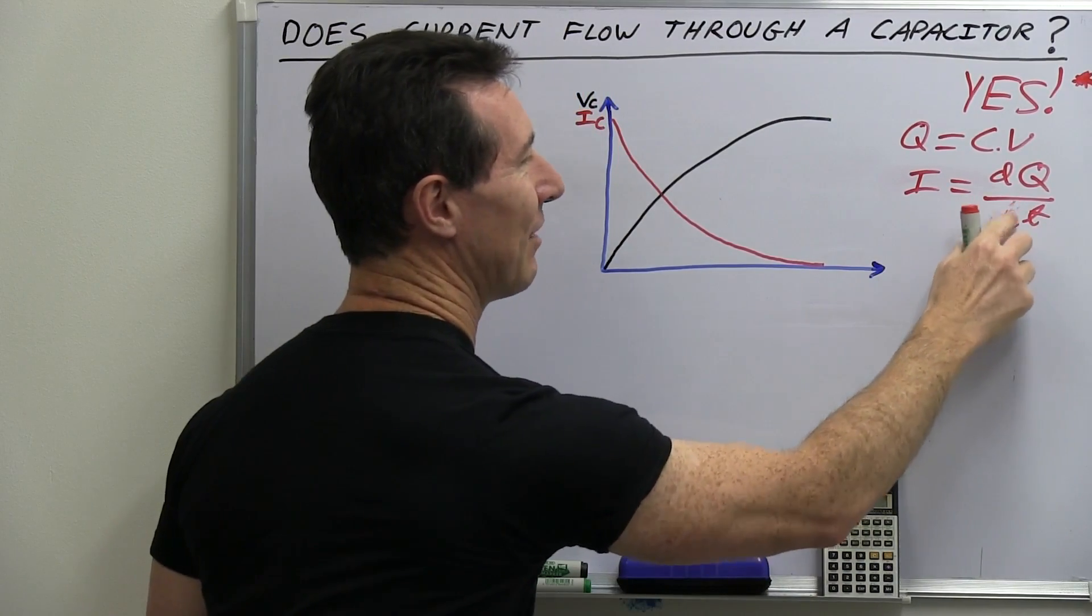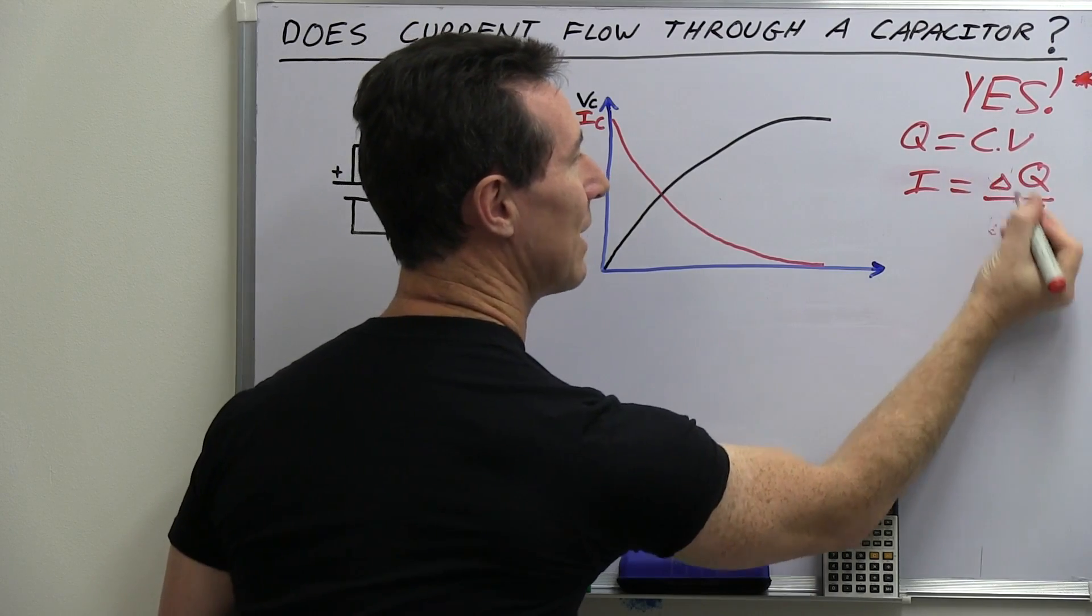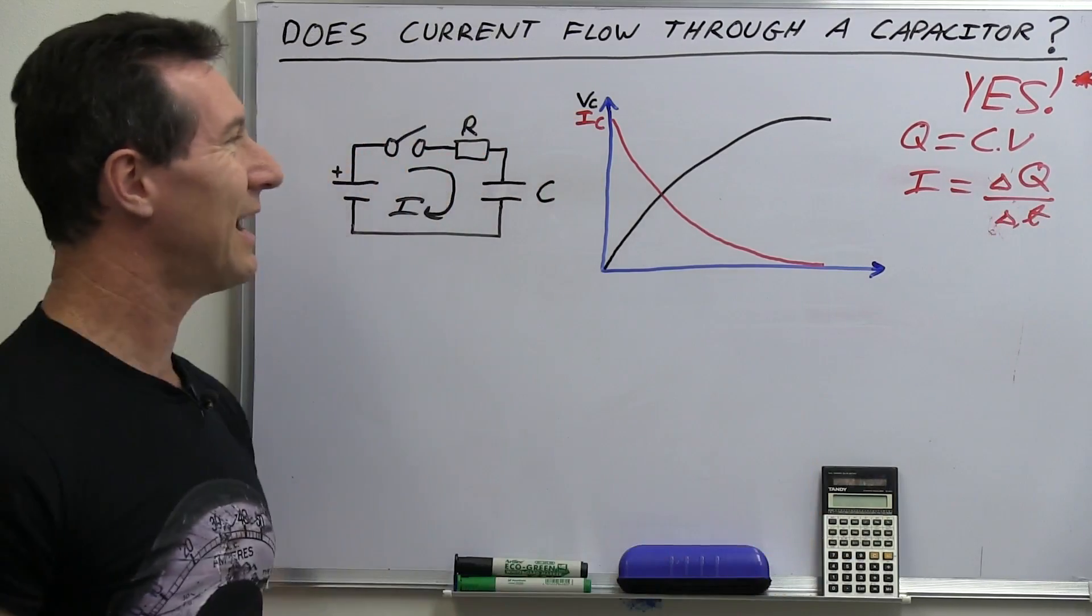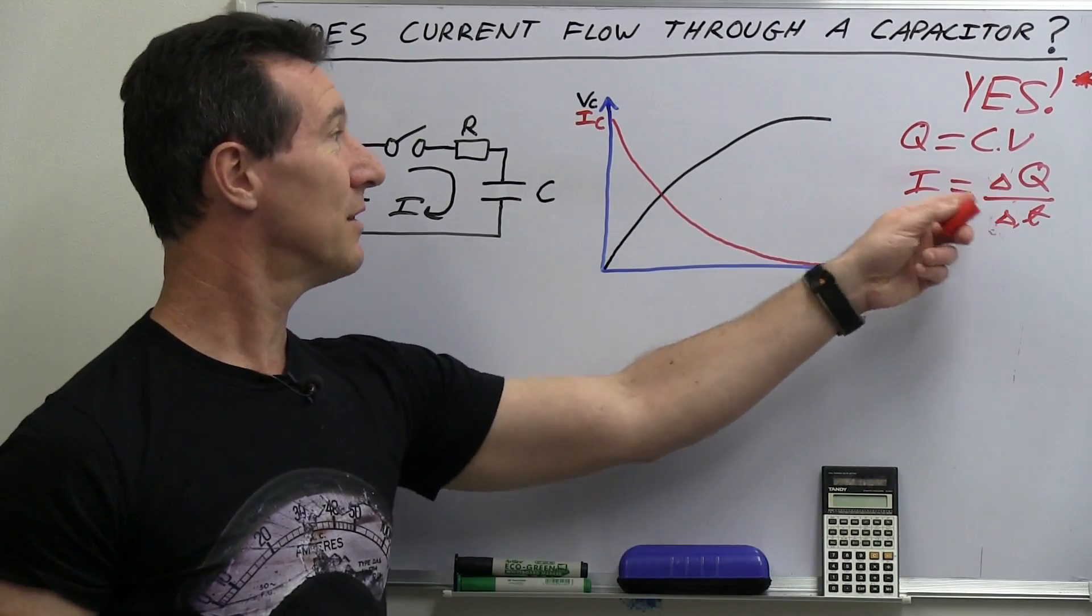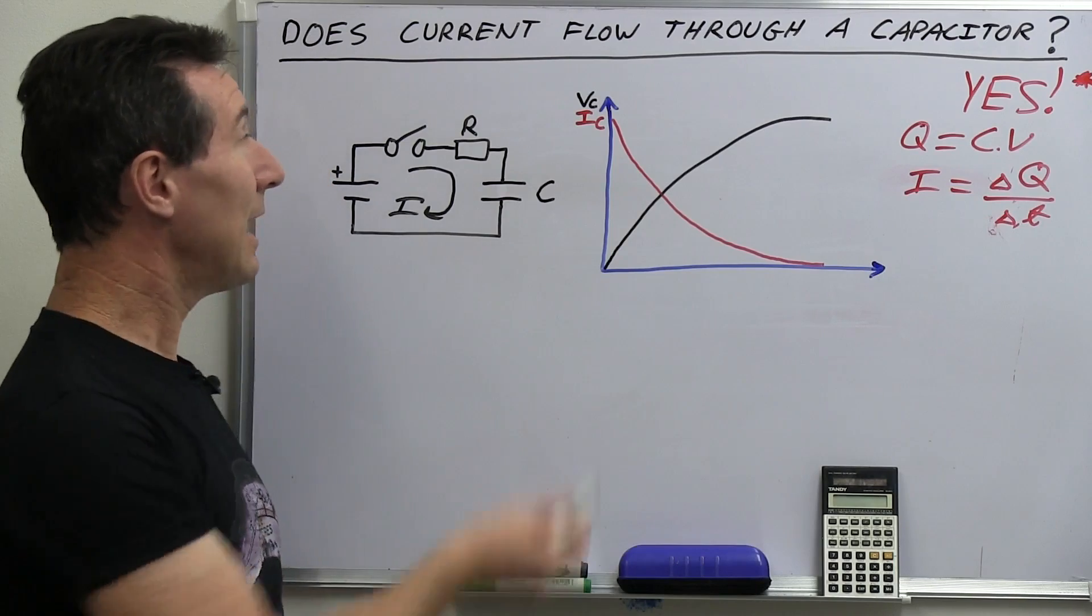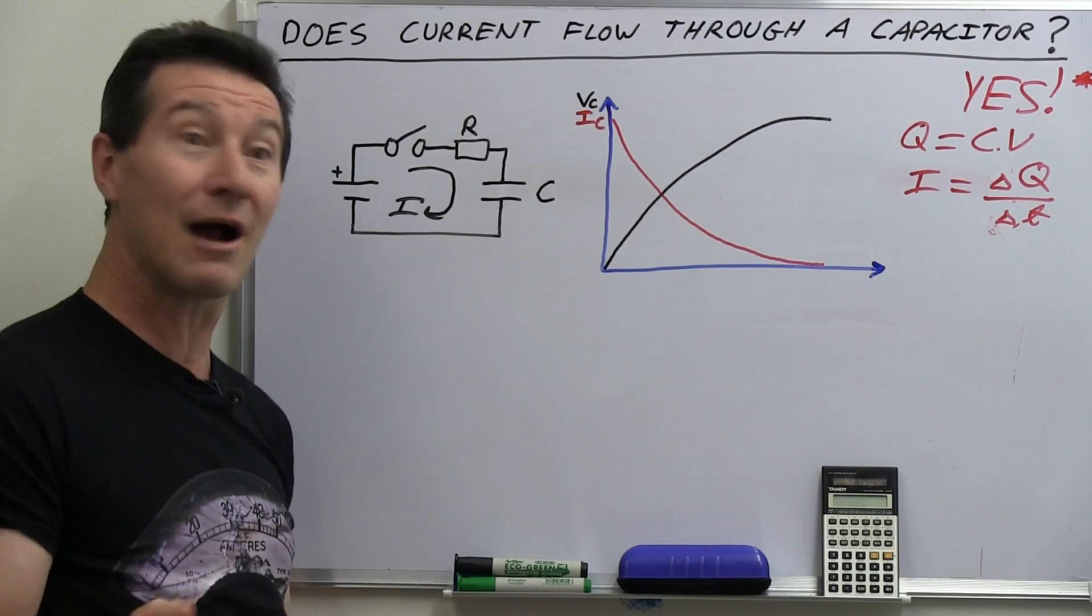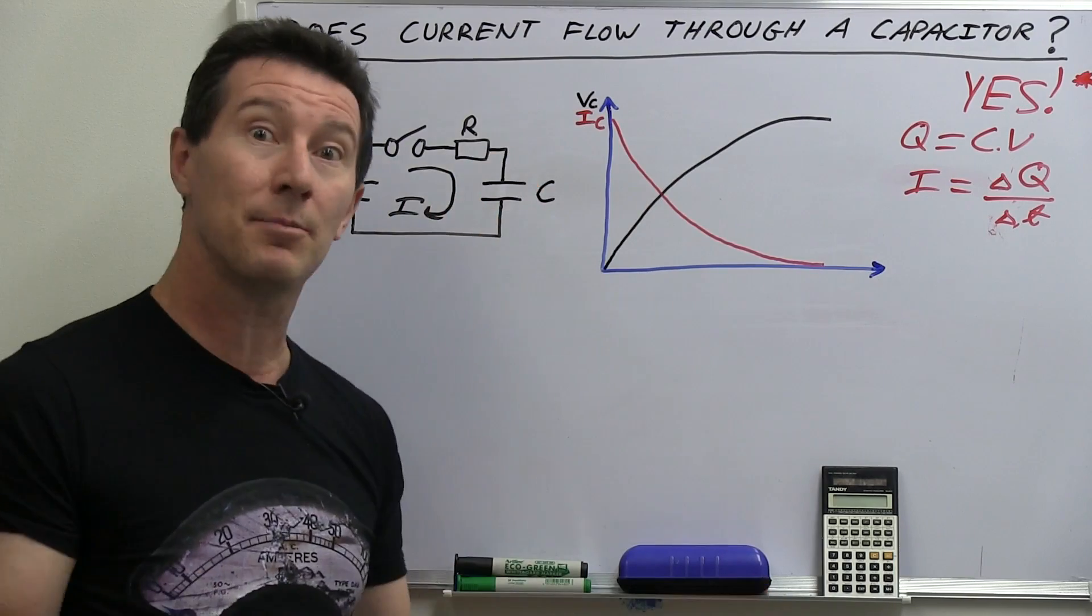Some people, you know, they don't like to use d in there. You could use like delta or something like that. It just means change. So the current equals the change in the charge versus the change in time. And that's where that graph comes from. It's not rocket science. Current is flowing in the capacitor.